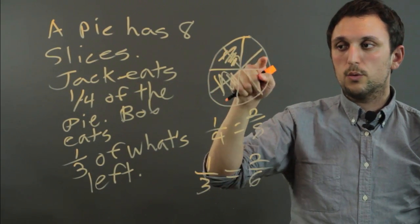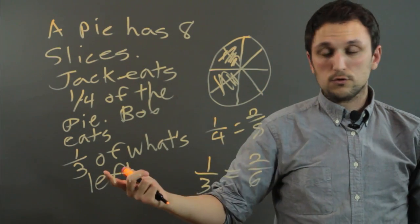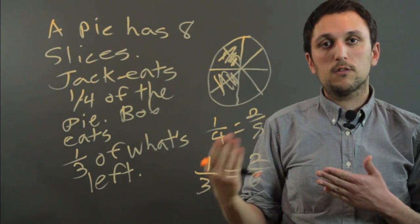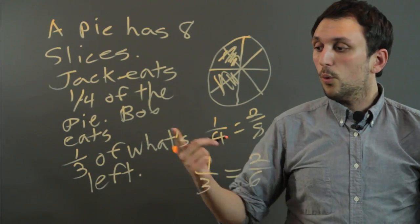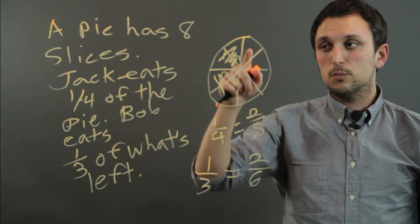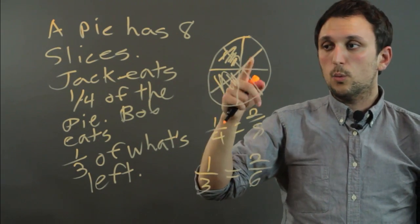And so now we're left with 1, 2, 3, 4. So the question in the word problem might be, how many slices are left, which would be 4, or what fraction of the original is left, which would be 4 eighths or 1 half.